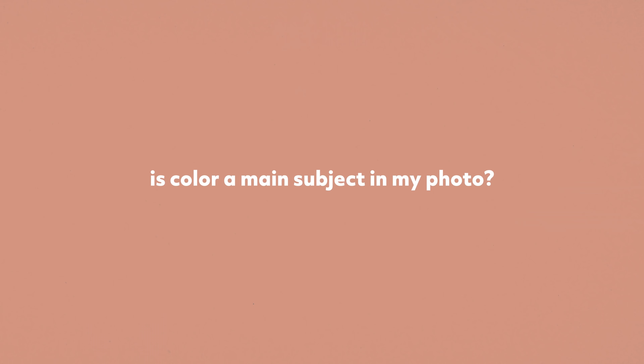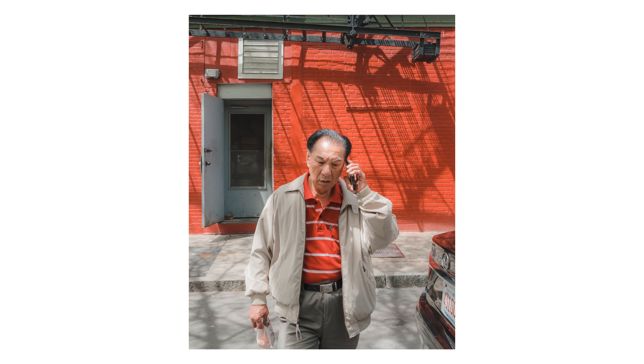One thing I'll ask myself is whether or not color is a main subject in the photograph. If color is one of the main subjects in my photo then I'm going to know I'll be using color. What I mean by color being the main subject is that the color in the image is what made you take the photo in the first place. For example, this man is wearing a red shirt and the background behind him is red — I saw that red connection and that's why I took the photograph. Sometimes we take photos where we unintentionally find that color can be considered a main subject, so just make sure to ask yourself that question, especially as a street photographer dealing with a ton of photographs.